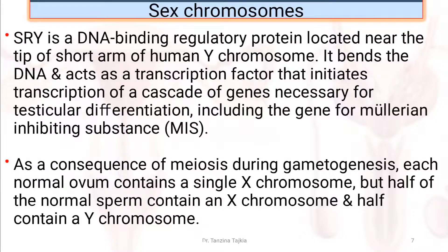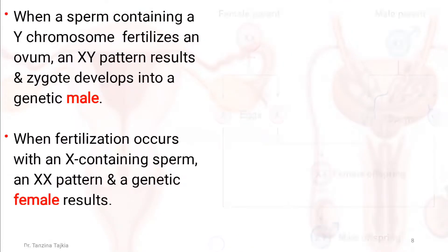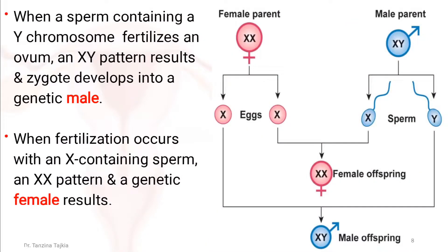As a consequence of meiosis during gametogenesis, each normal ovum contains an X chromosome, and half of the normal sperm contain an X chromosome while half contain a Y chromosome. When a sperm containing a Y chromosome fertilizes an ovum, an XY pattern results and the zygote develops into a genetic male. When fertilization occurs with an X-containing sperm, an XX pattern results and a genetic female develops.